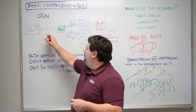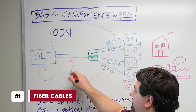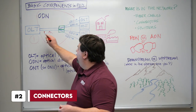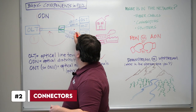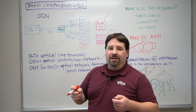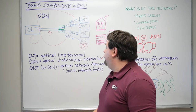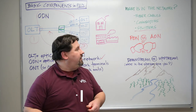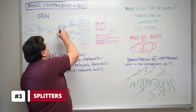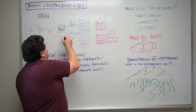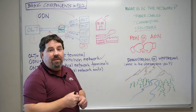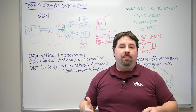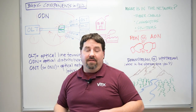One, we have our fiber cables. Two, we're going to have any of our connectors, such as patch panels, mating connectors, or adapters. And then the third major component is our splitters — because if you think about it, without how the PON signal is split across multiple users, it really wouldn't be an effective type of architecture.